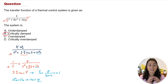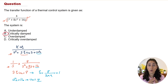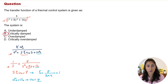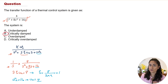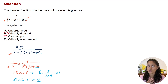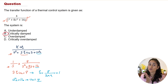The answer is B — critically damped. This is how we solve this type of problem. On the FE exam you might be asked to find the damping ratio or the natural frequency, and you would follow the same exact steps as we did here.